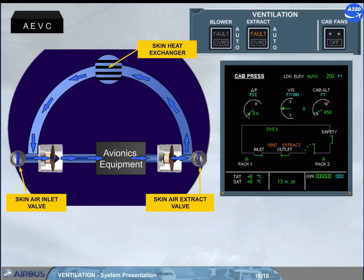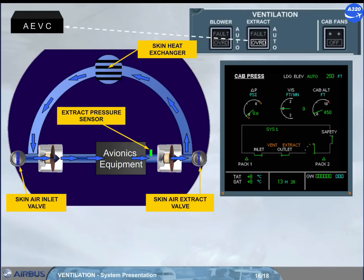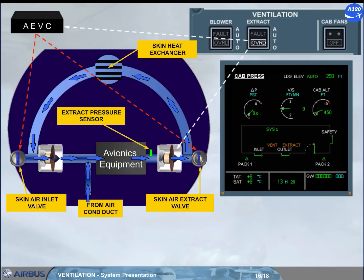A fault light comes on the related push button switch in case of an extraction flow problem. Setting that push button switch to override allows the ventilation system to be reconfigured by activating the closed circuit configuration, by transferring the control of the extract fan to the push button switch, and by adding air from the air conditioning duct through an air conditioning inlet valve.